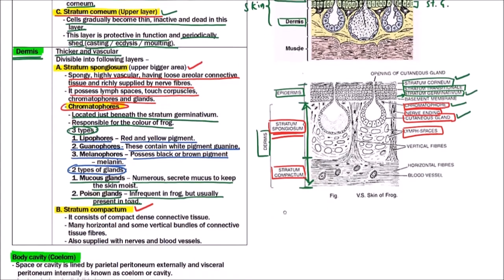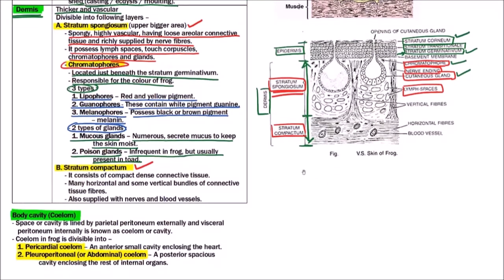Now the next layer is stratum compactum. Stratum compactum consists of compact dense connective tissue. Many horizontal and some vertical bundles of connective tissue fibers are also present. These are also supplied by the nerves and blood vessels. So these nerves and blood vessels are present in the dermis while the epidermis is lacking them.